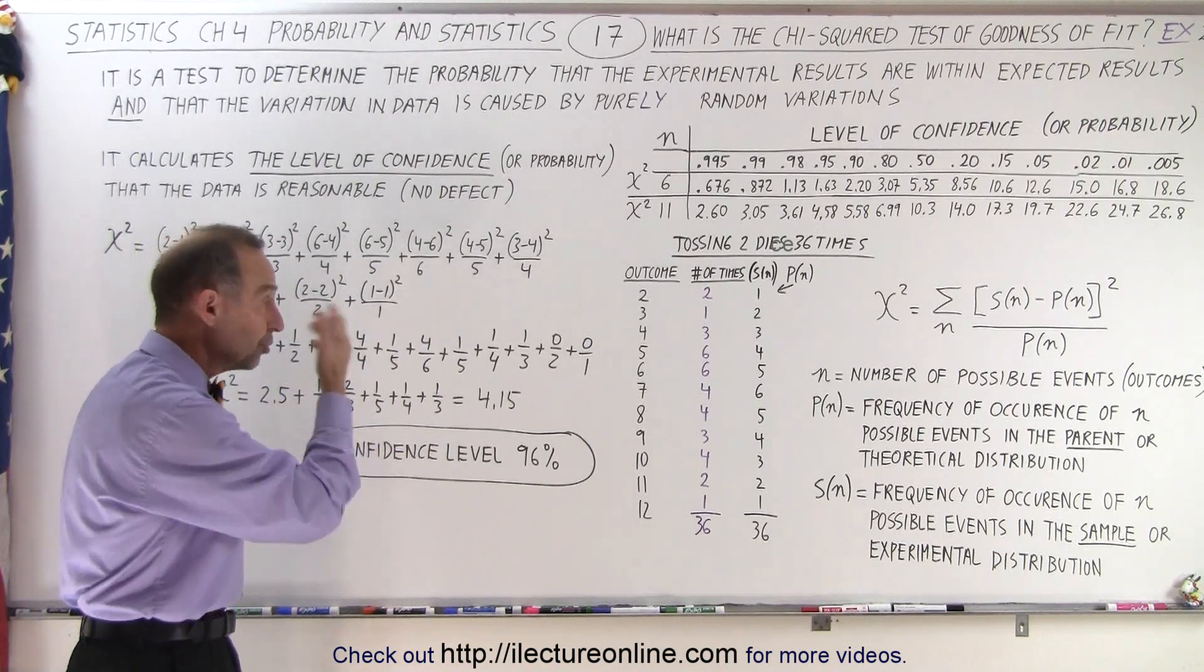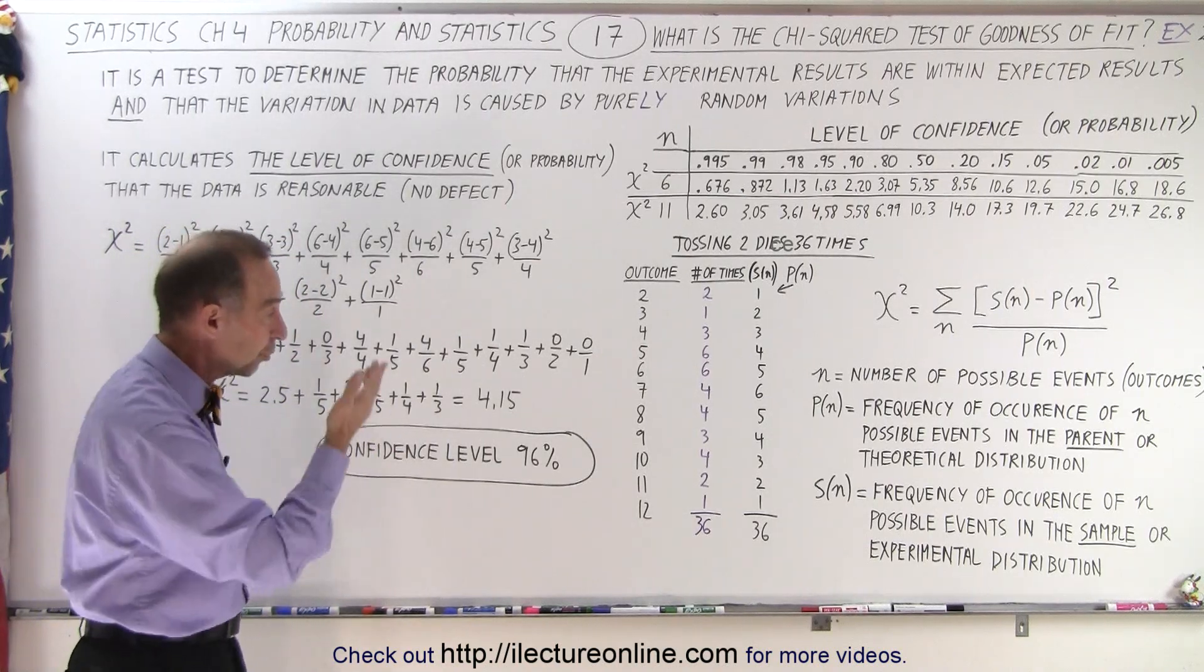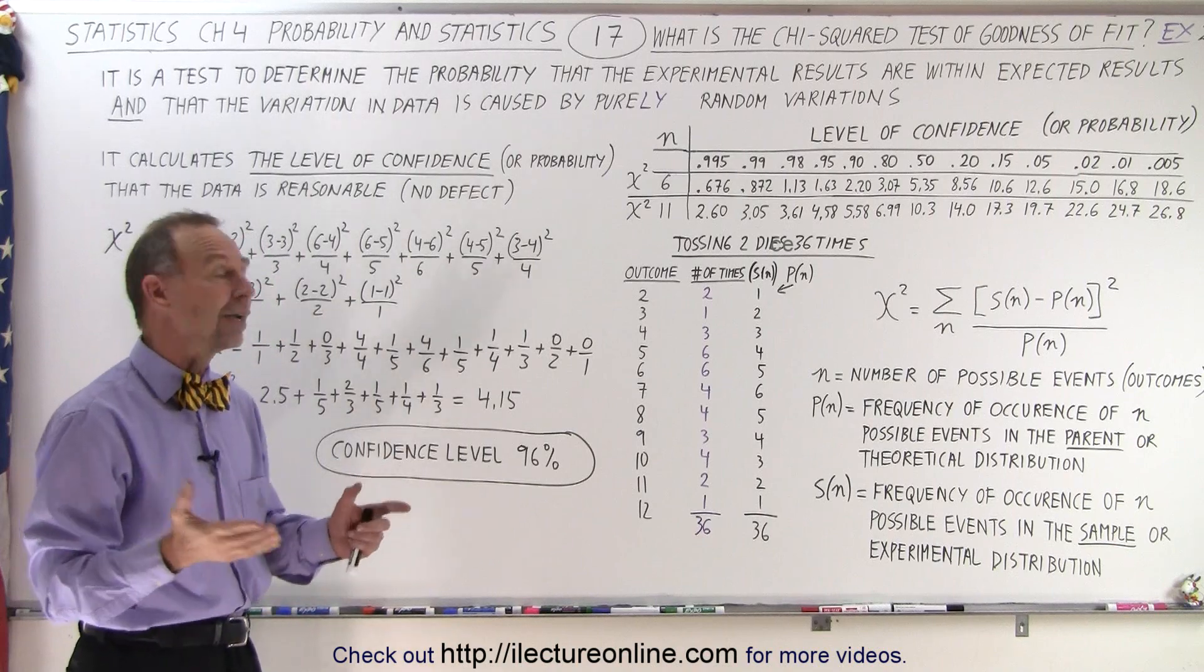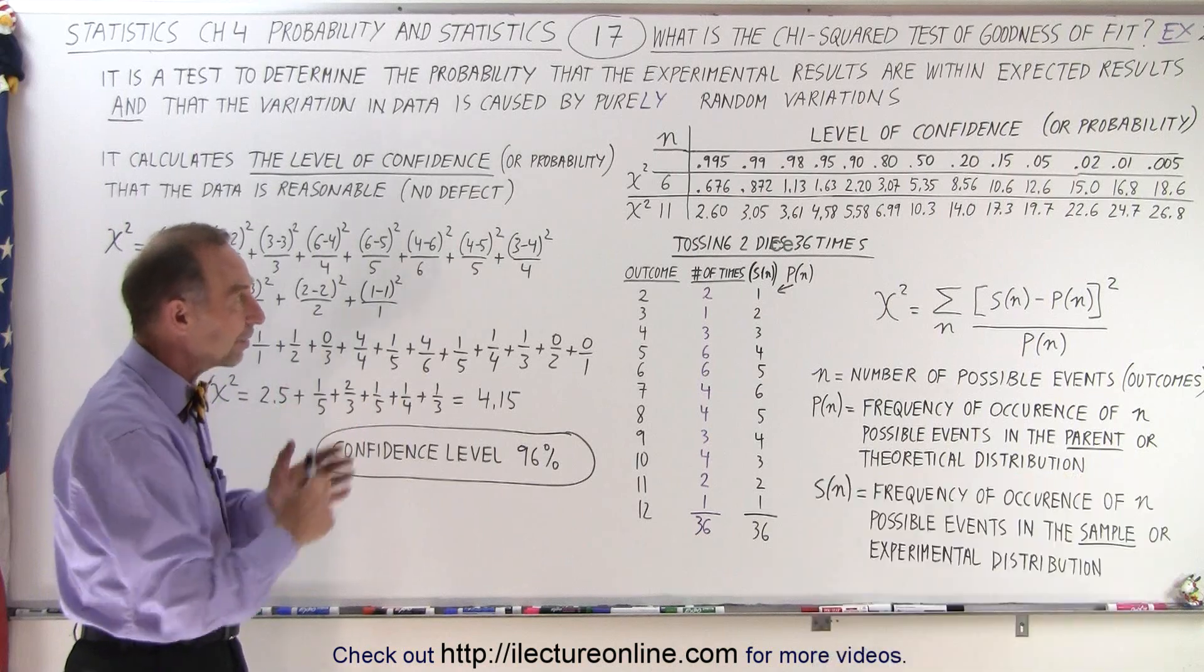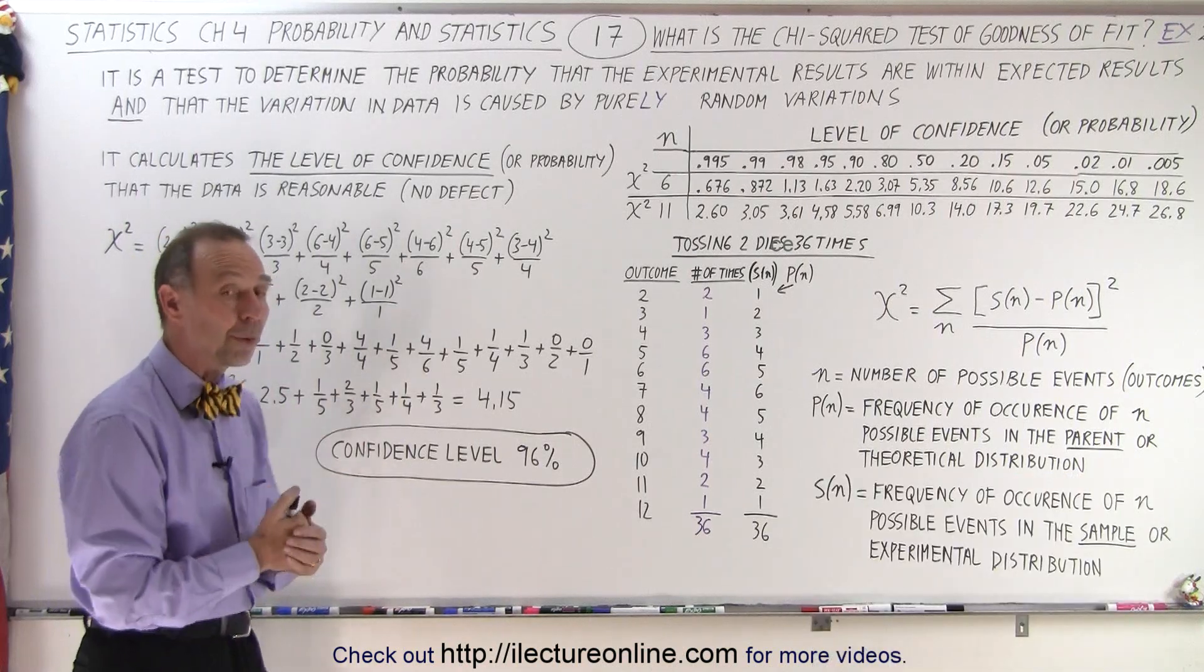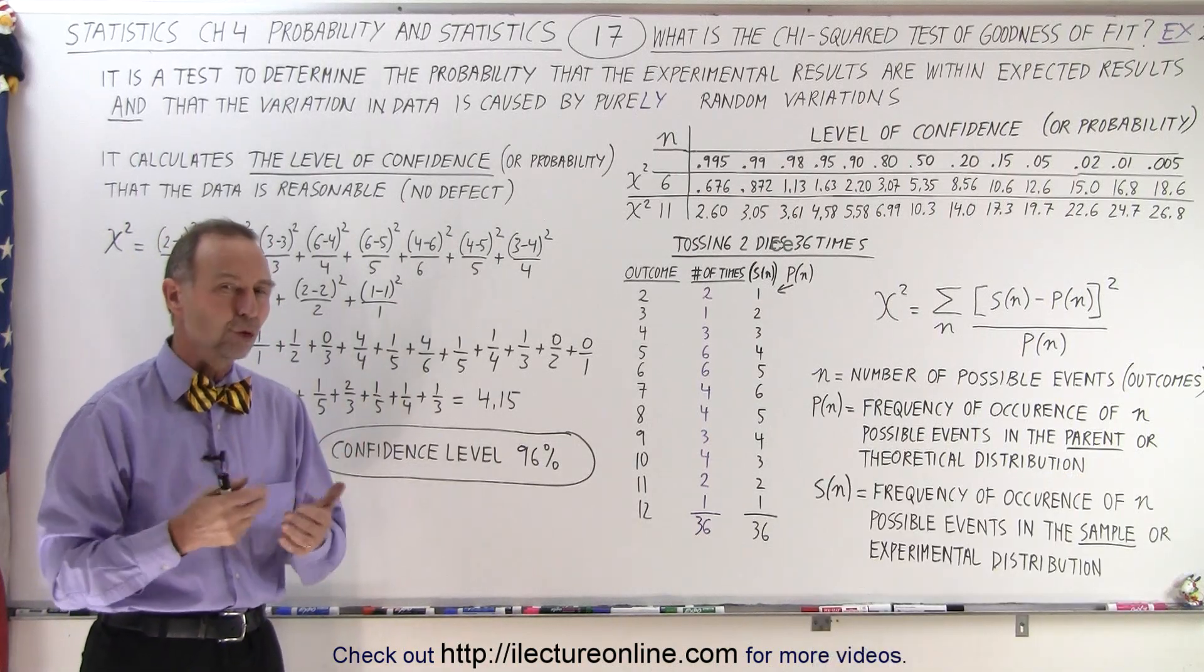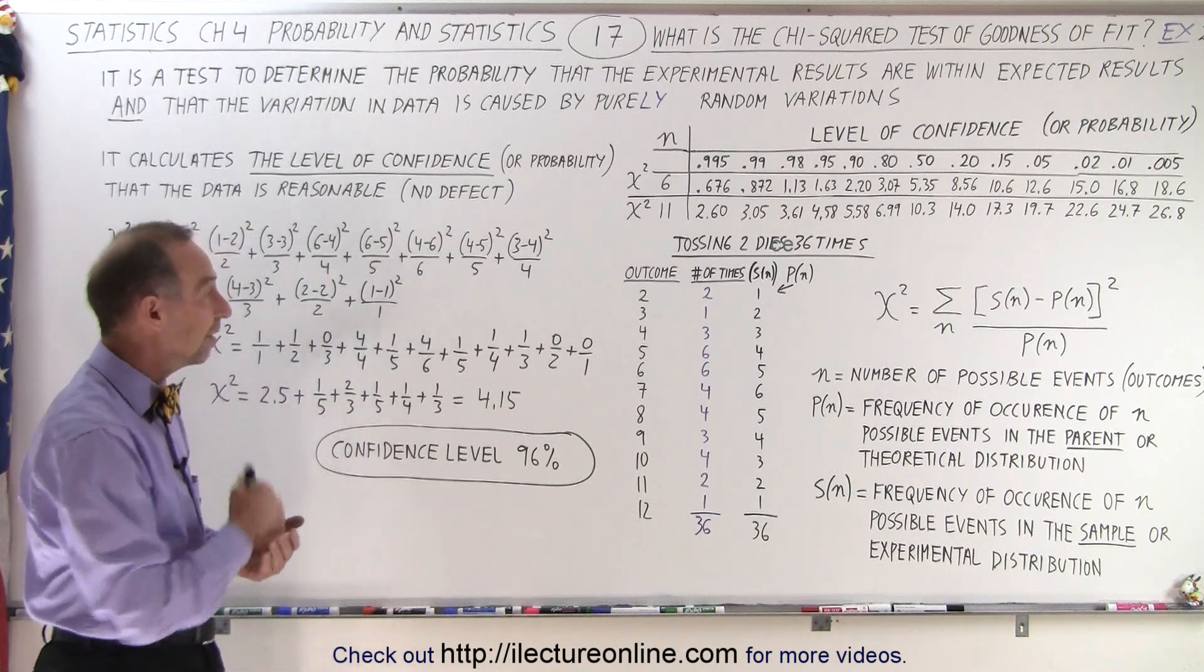So, we can assume that the two dice that we use to come up with those numbers are probably good dice, and we have a very high confidence level that the dice are good, and that the outcome is according to what we would expect for using two normal dice. And this is how it's done.